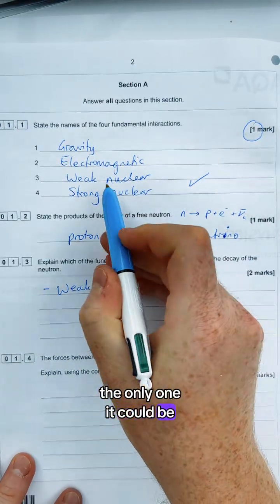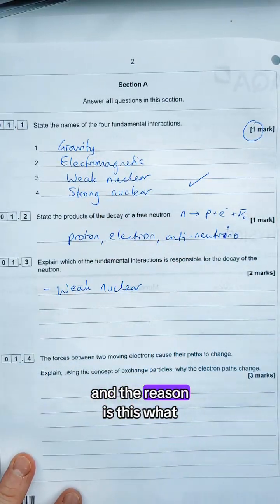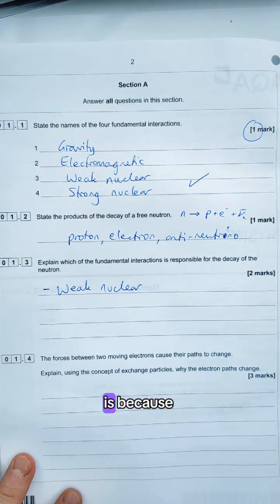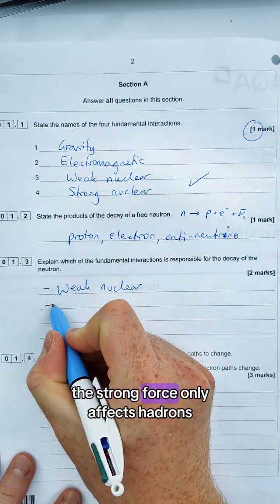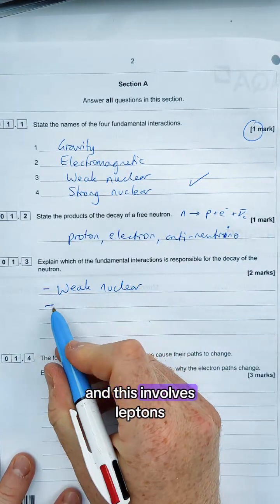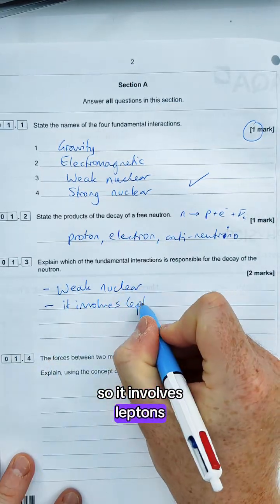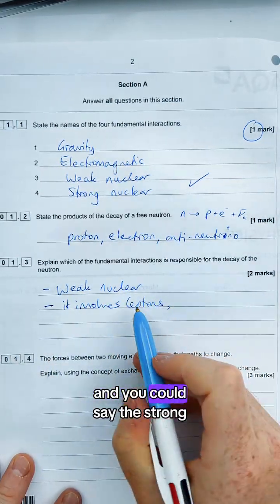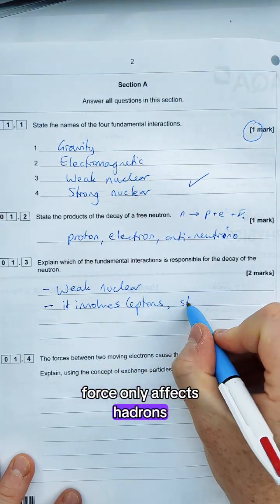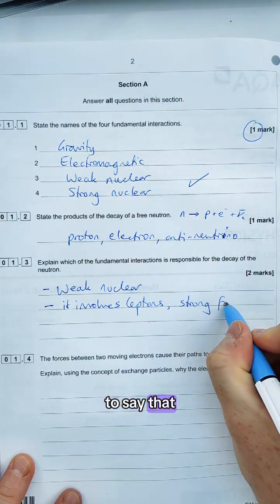Out of those four, the only two it could be is weak or strong really. And the reason it's not strong is because strong force only affects hadrons and this involves leptons. So it involves leptons, and you could say the strong force only affects hadrons, but it would be fine just to say that. There we go, that's two marks for that question.